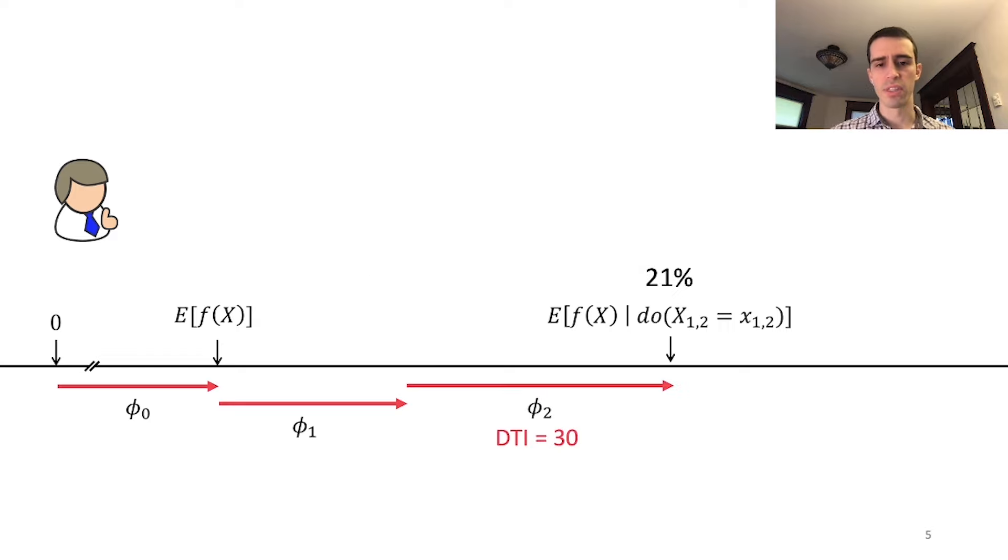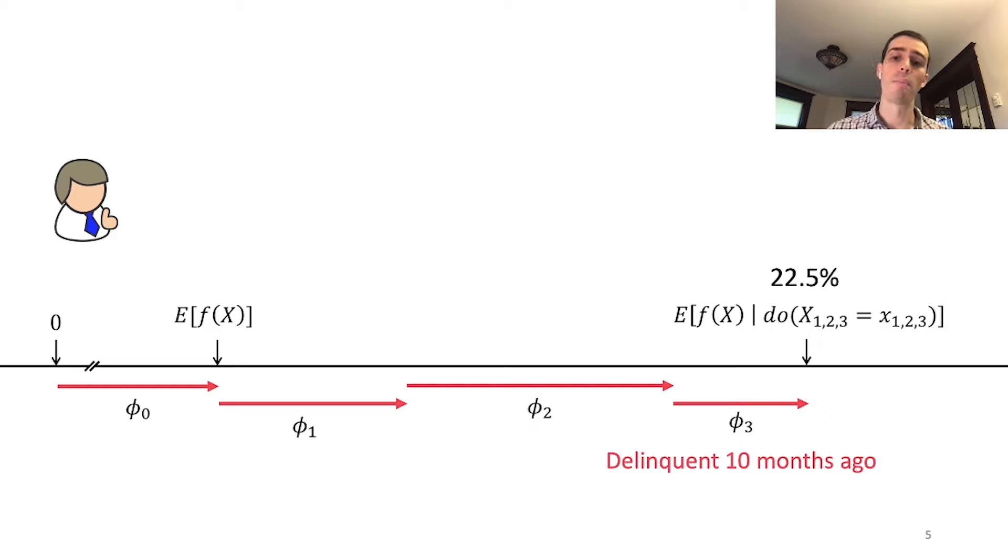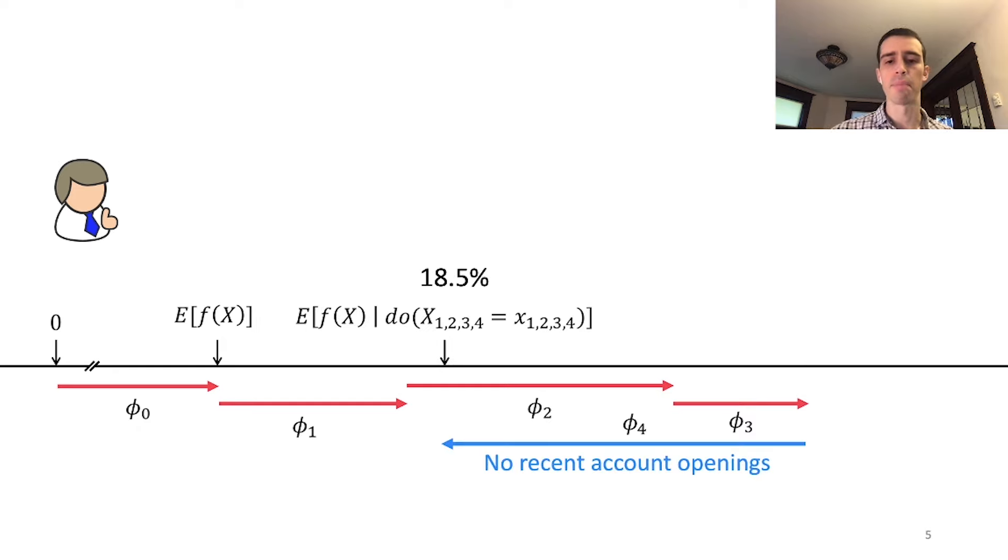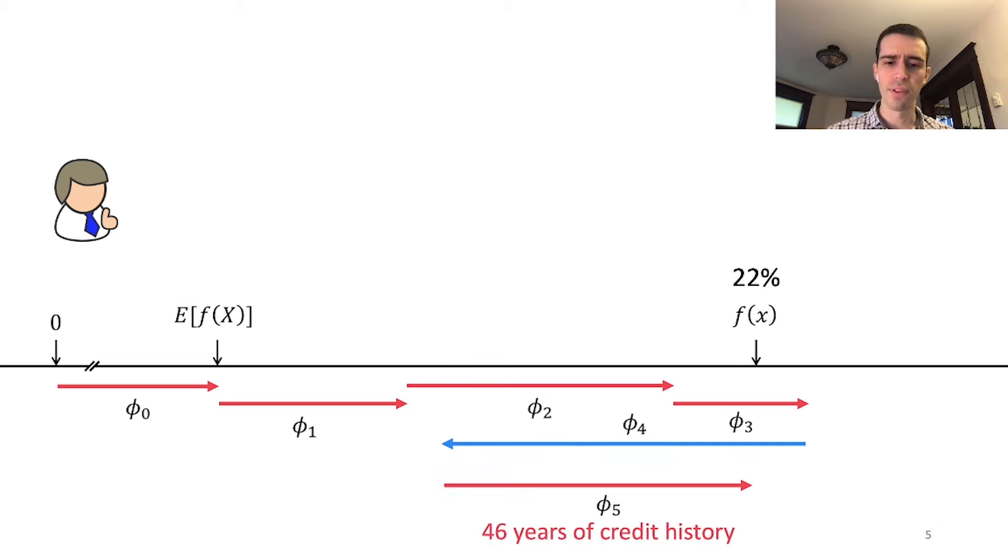Doing the same for his debt-to-income ratio of 30 bumps him to 21%. He had a delinquent payment 10 months ago, further increasing risk to 22.5%. We're filling out his application one entry at a time. Then we add that he had no recent account openings, which drops his risk significantly—not applying for credit is a good sign.